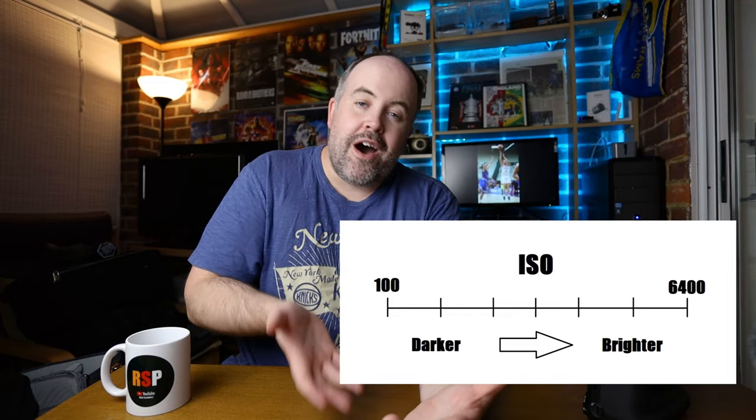Now you've got your two main settings sorted — that leaves ISO. Let's say we're shooting something moving fast: I've set 1/800th of a second and f/2.8. Now set your ISO roughly where you think it should be — let's say ISO 200 — and take a photo. If it's too dark, bring the ISO level up higher. As a general rule, you want ISO as low as possible so you don't get a grainy image, but high enough to make your image bright enough given your other two settings.